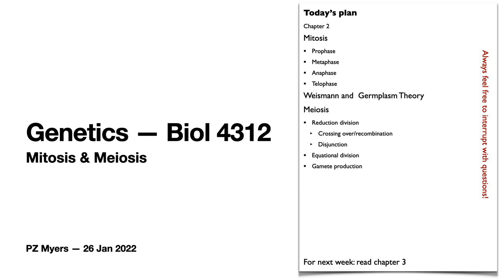Where we're at is last time I talked about chromosomes — these weird little blobs that you can visualize in the nuclei of cells. You see them most prominently at about the time the cell is going to divide. This was a clue to all those 19th century biologists that these might have something to do with cell division, so let's look at them more closely.